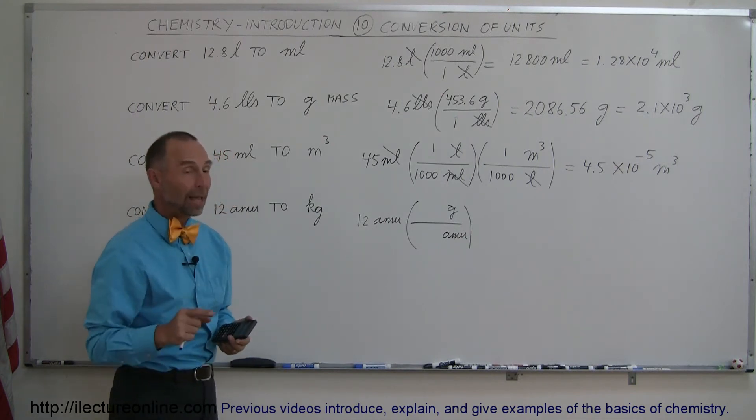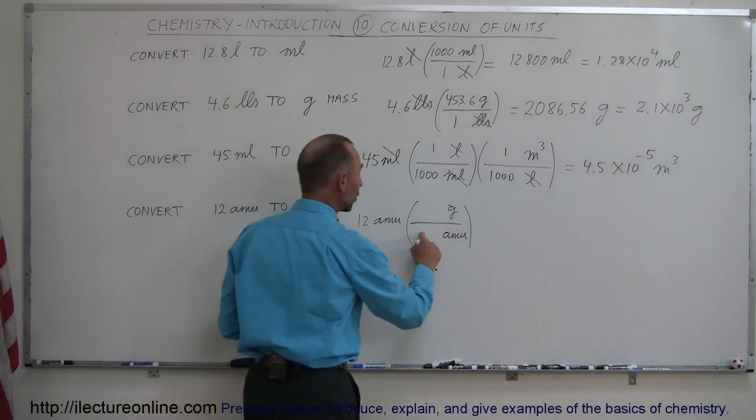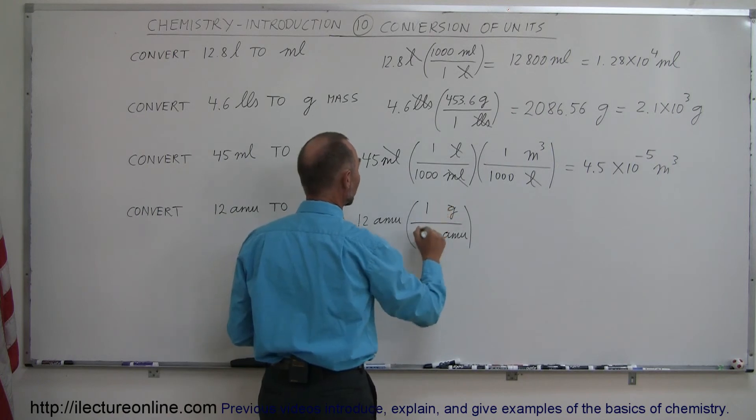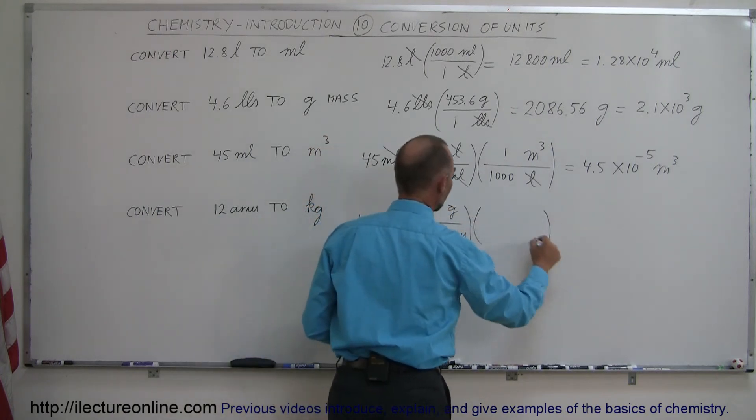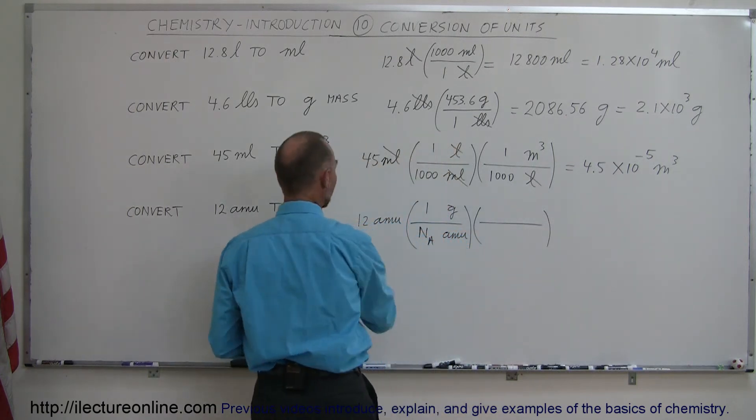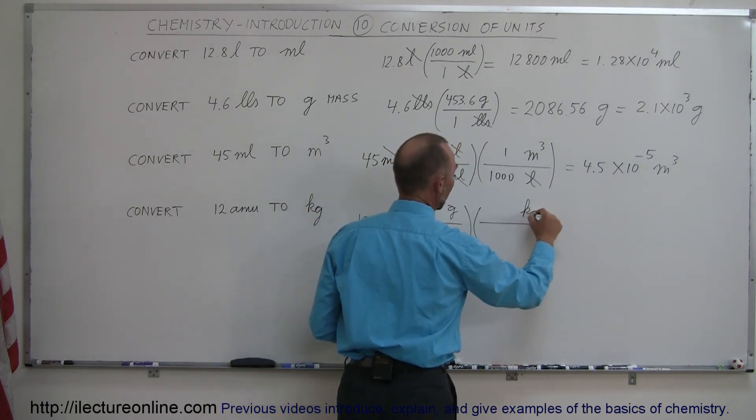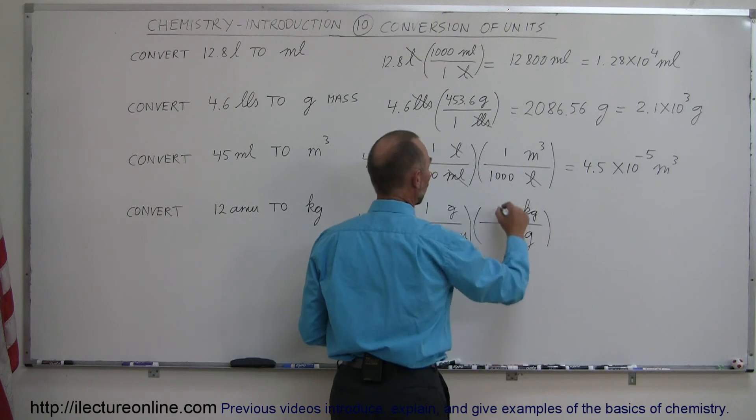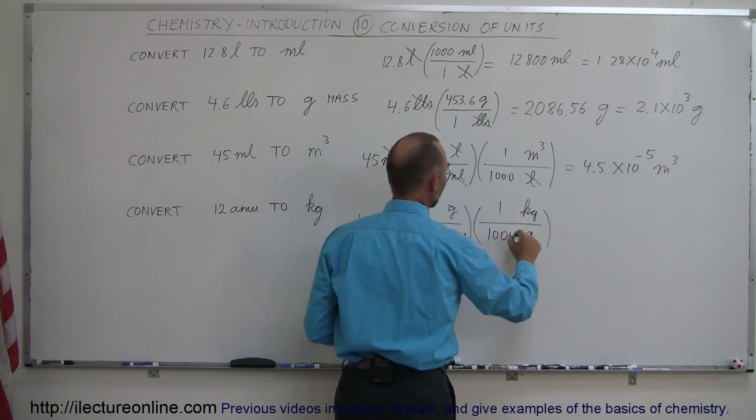What is the conversion ratio? It turns out that one gram is equivalent to Avogadro's number of AMUs. So this is one divided by Avogadro's number. Then multiply that times the ratio to go from grams to kilograms. So one kilogram at the top, grams at the bottom. One kilogram is a thousand grams.